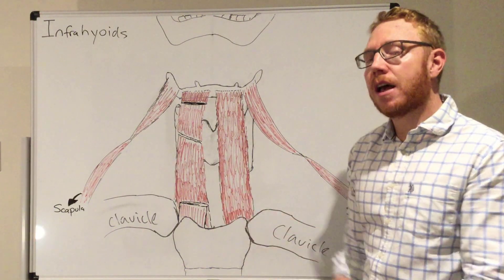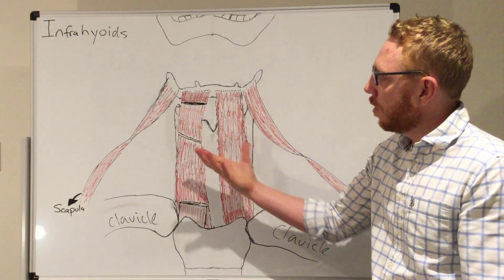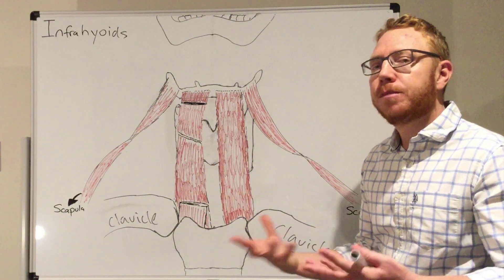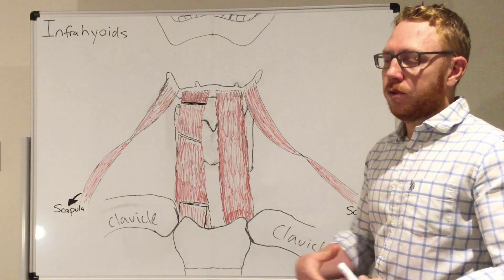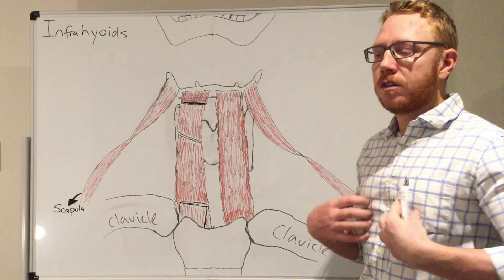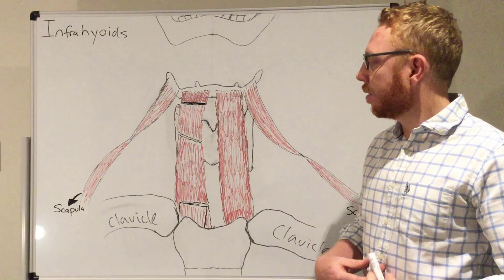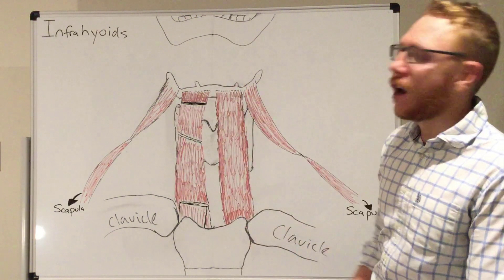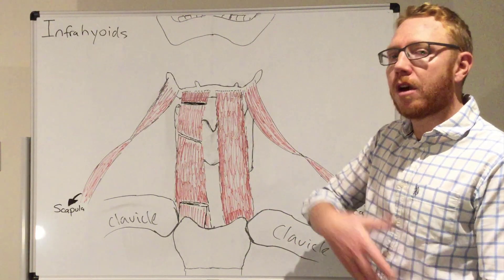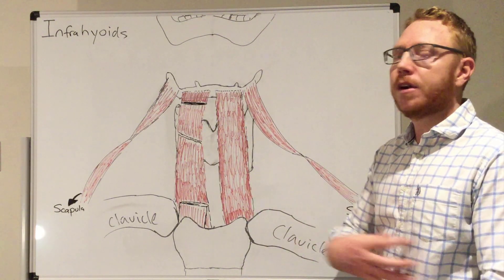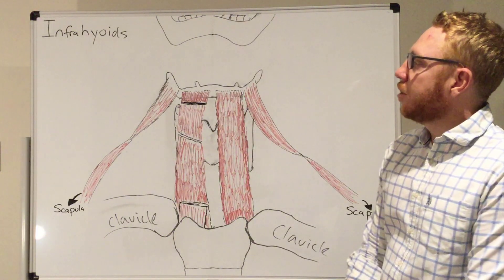Before we start the individual ones, it's interesting to know that this group of muscles seem to be compared to or homologous to in the thorax your intercostals, or in your abdomen the anterior abdominal muscles, particularly the rectus abdominis. These are known as the strap muscles and they seem to be embryologically equivalent to those groups of muscles in different body regions.